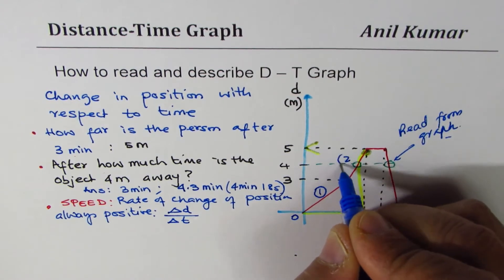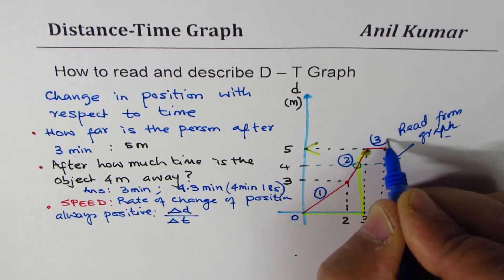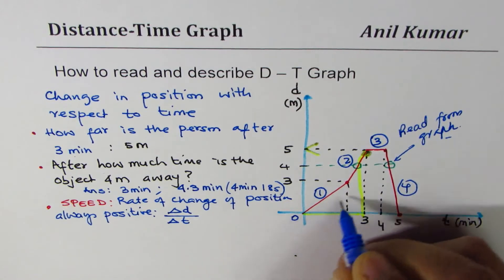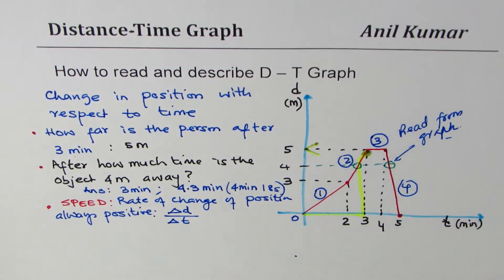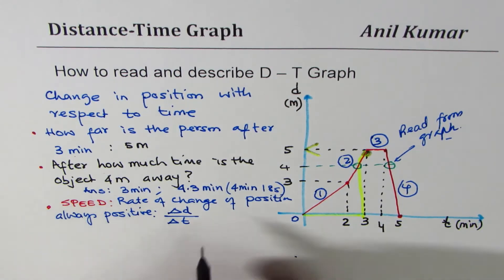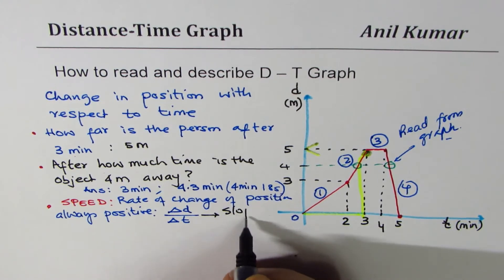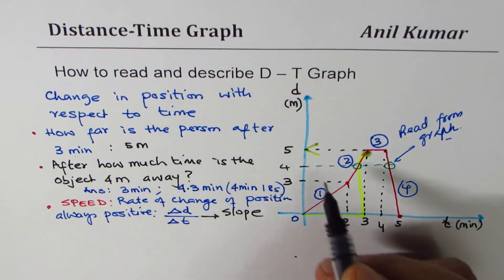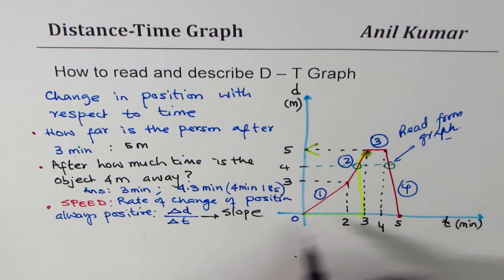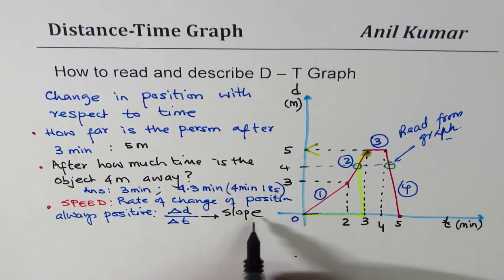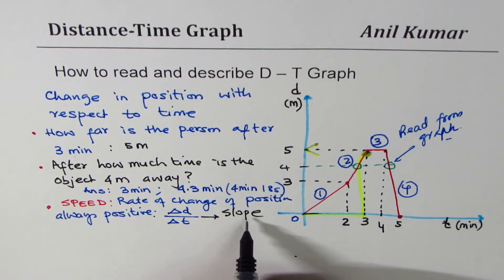Let's look at the legs of the graph. The first leg, second leg, third, and fourth — in each leg the speed is different because the slope is different. So speed is related to slope: change in distance (rise) over change in time (run), which is rise over run.